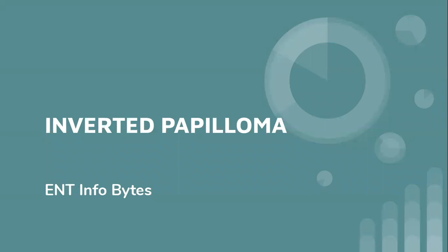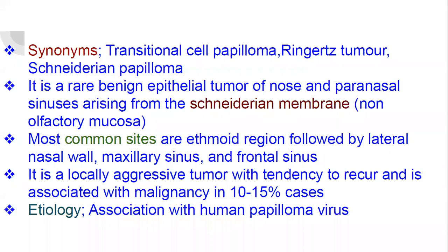Inverted Papilloma. Synonyms are Transitional Cell Papilloma, Ringert's Tumor, and Schneiderian Papilloma. It is a rare benign epithelial tumor of the nose and paranasal sinuses arising from the Schneiderian membrane, i.e., the nasal olfactory mucosa.